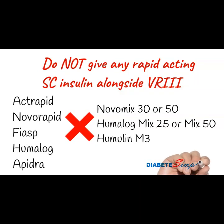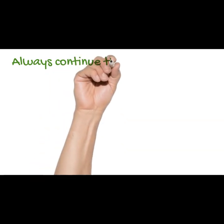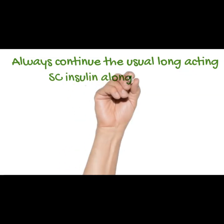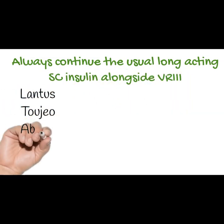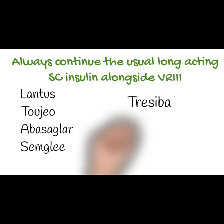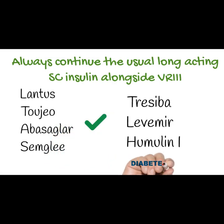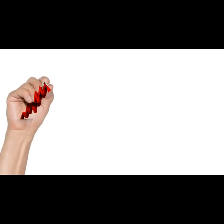If a patient is already taking one of these insulins, make sure they have been held off whilst the patient is having VRIII. If someone is already on a long-acting insulin, which is also called a background insulin, this must be carried on with the variable rate intravenous insulin infusion. Some of the names are Lantus, Toujeo, Basaglar, Semglee, Tresiba, Levemir, or Humulin I. These insulins should not be stopped whenever a patient is started on VRIII.